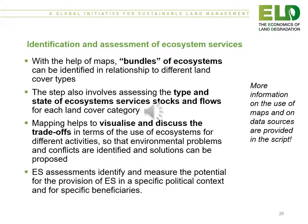With the help of maps, bundles of ecosystems can be identified in relationship to different land cover types. This step also involves assessing the type and state of ecosystem services, their stocks and flows for each land cover category. Mapping helps to visualise and discuss trade-offs in terms of the use of ecosystem services for different activities, so that environmental problems and conflicts are identified and solutions can be proposed. Ecosystem services assessments identify and measure the potential for the provision of ecosystem services in a specific political context and for specific beneficiaries.